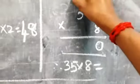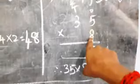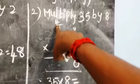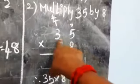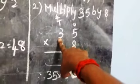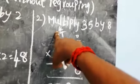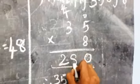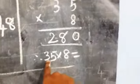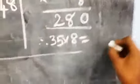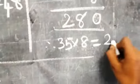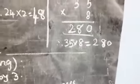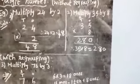Four carries over to the tens place. Then eight threes are twenty-four, and adding the carried four gives twenty-four plus four equals twenty-eight. Therefore thirty-five into eight is equal to two hundred and eighty.